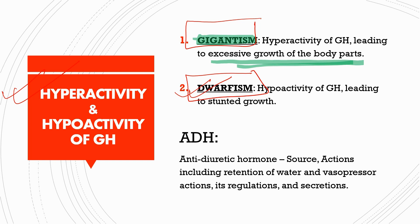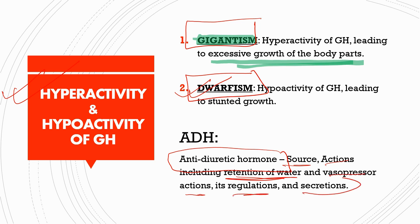Next we have ADH — the antidiuretic hormone. Its source, actions including the retention of water and vasopressor actions, its regulation, and secretion must all be included in your notes on antidiuretic hormone.